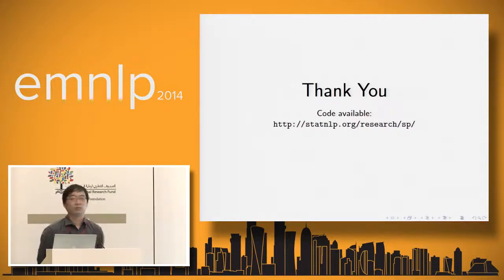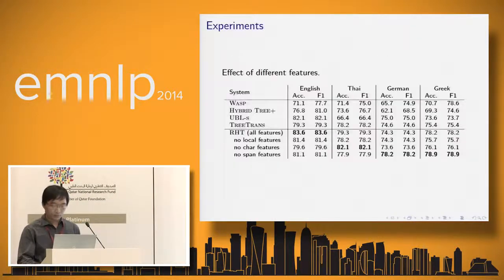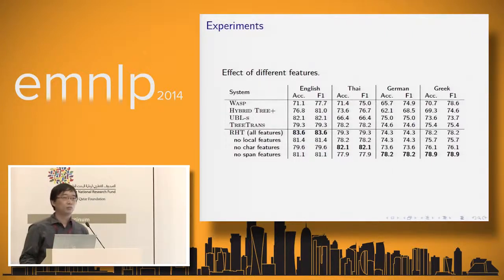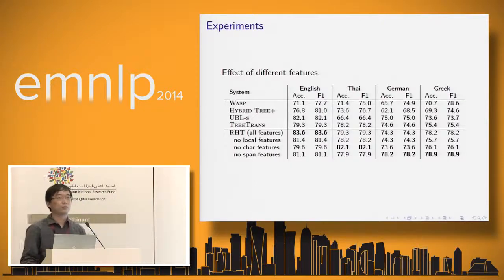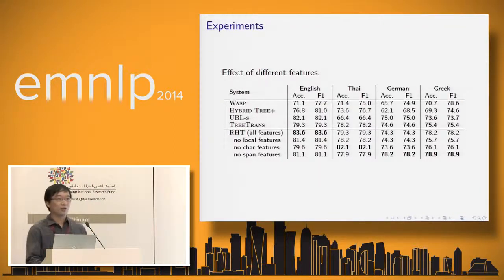Audience question: The performance seems to vary quite a lot across languages with the different features. Do you have deeper insights from language-specific error analysis? And algorithmically, could a feature-selection algorithm help improve results overall? Response: That's a very good question. I don't know German, so I didn't have a chance to look closely at what's happening there. In terms of feature selection, that's something we'd probably want to do in the future, but we have over a million features for each language.